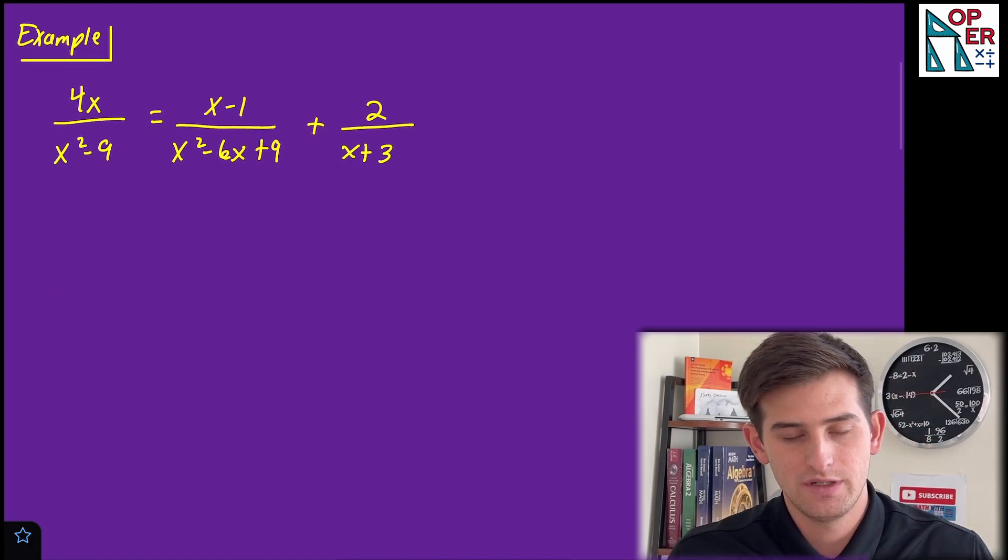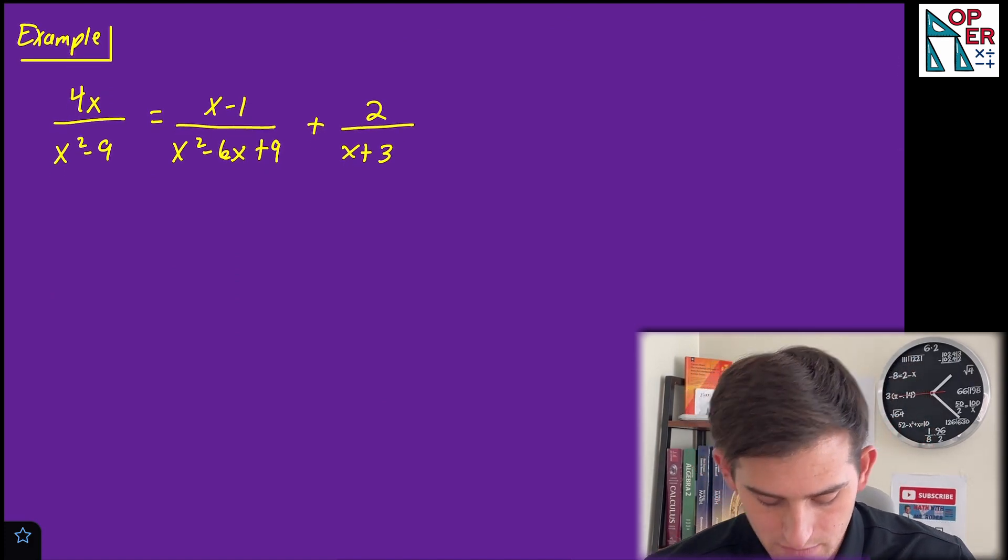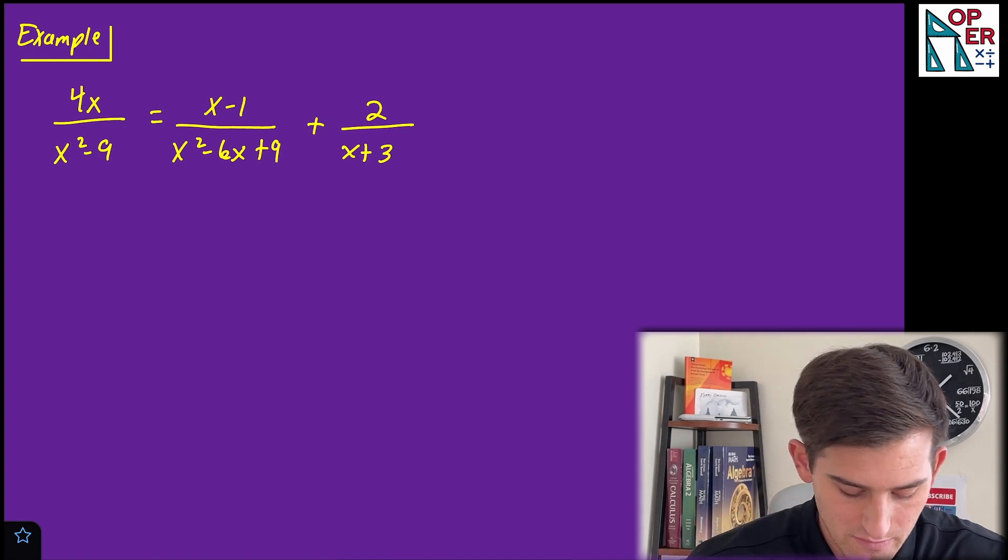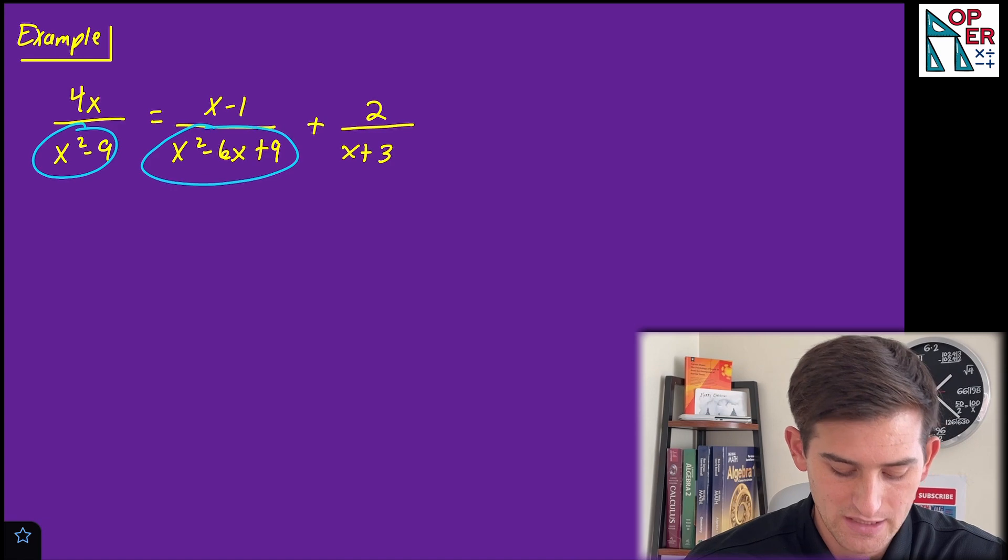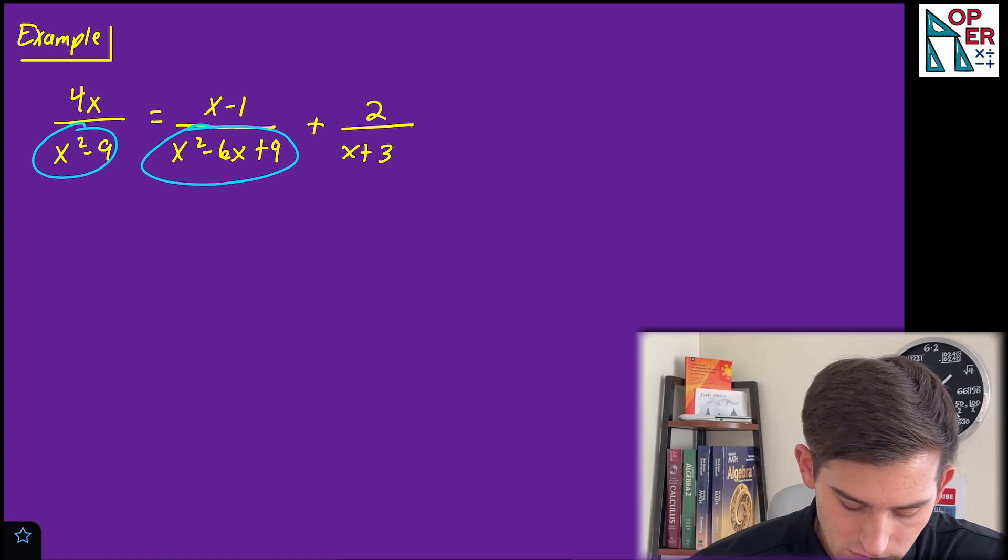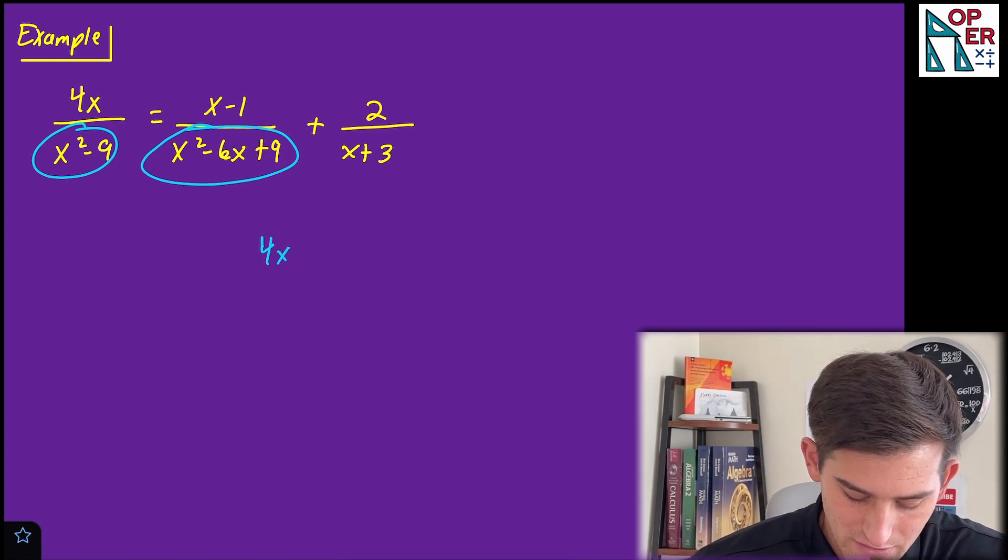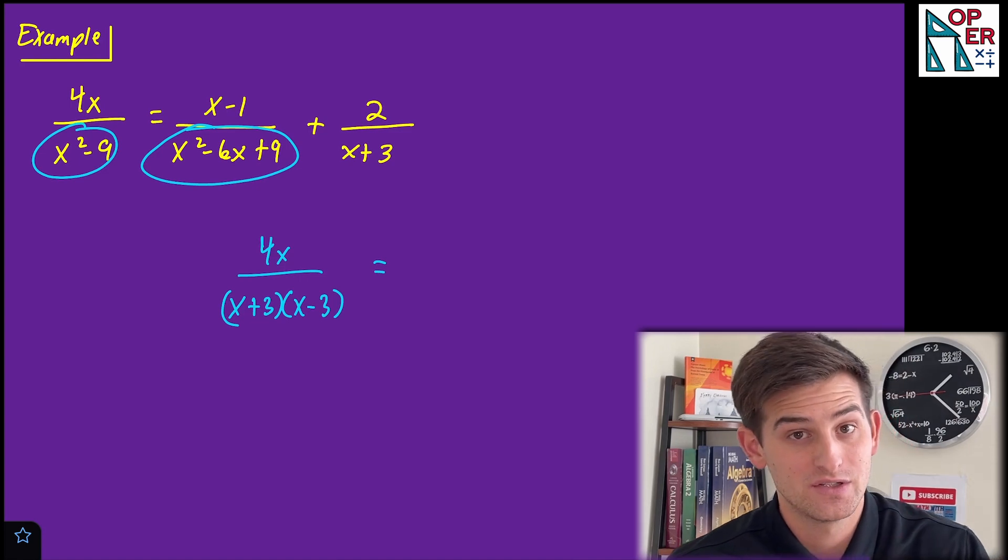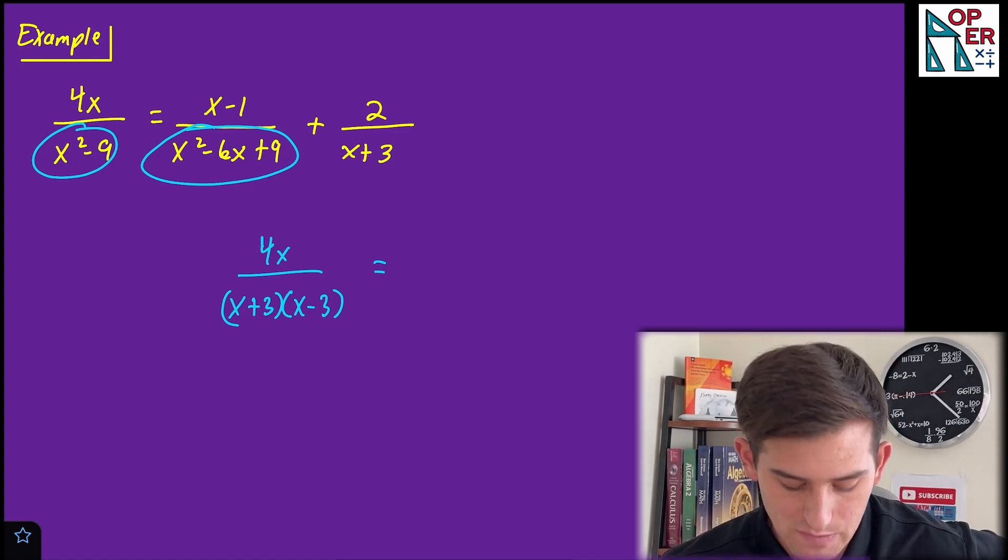So the first thing we wanna do is find our least common denominator. Well, we noticed that we have a couple special products here in our denominator, X squared minus nine and X squared minus six X plus nine. So if I factor those out, four X over, this would be X plus three times X minus three, right? That's our difference of two squares. It factors as the sum and difference pattern.